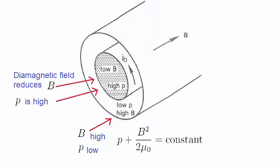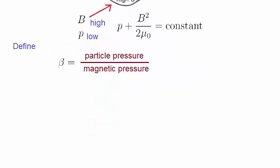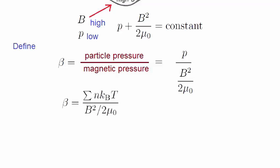So the relative values of the particle pressure and the magnetic pressure are quite significant in plasma fusion research. We define a parameter β, which is the ratio of the particle pressure to the magnetic pressure, given mathematically by this. The pressure in the plasma is caused by all species — for example, the electrons would cause a pressure, and so would the ions. So P is really the sum of all particle pressures. We can rewrite this equation as follows, where we've used the ideal gas law P equals NKT for each species of the plasma.